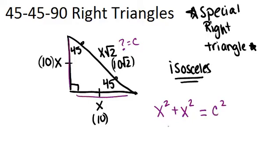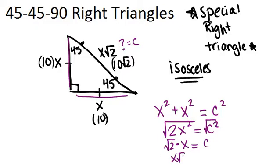That means I can combine like terms, and we have 2x squared equals c squared. And when we square root both sides, we get root 2 times x equals c. Another way of writing this is just x root 2.